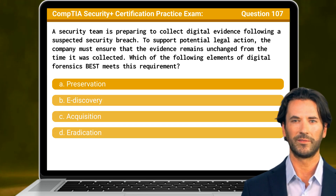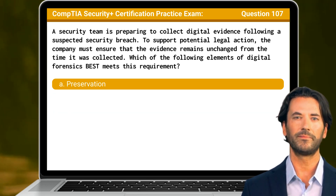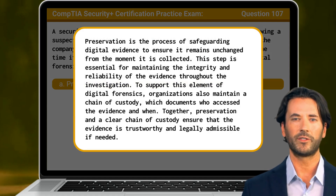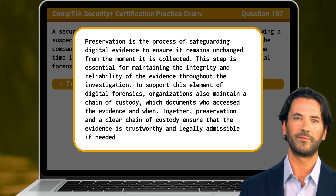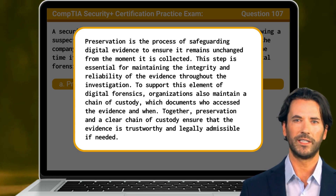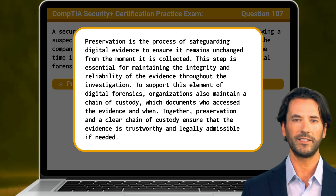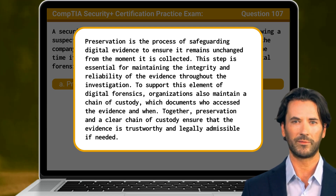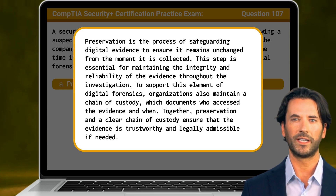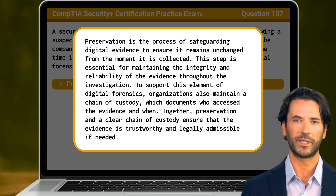The answer is A: Preservation. Preservation is the process of safeguarding digital evidence to ensure it remains unchanged from the moment it is collected. This step is essential for maintaining the integrity and reliability of the evidence throughout the investigation. To support this element of digital forensics, organizations also maintain a chain of custody, which documents who accessed the evidence and when. Together, preservation and a clear chain of custody ensure that the evidence is trustworthy and legally admissible if needed.